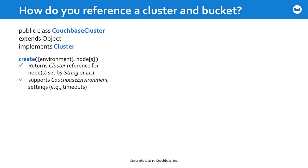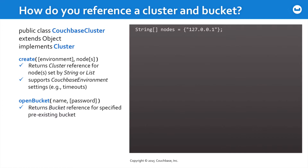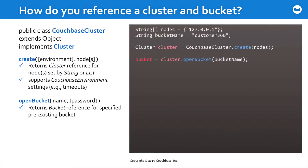That object allows you to open a specific bucket by name. If it is password controlled, that can be passed as well, and it'll return the bucket reference. So, if you have some set of nodes — here a very simple example of a string variable, we'll do something a bit more complex in the lab — and then a string bucket name, those nodes can be passed to the Create method of the CouchbaseCluster class, a factory method to return a cluster object. The cluster object, in turn, can be used to open a specific bucket by passing that bucket name. If there were a password, it would be passed here as well. That returns the bucket object, which is your primary point of interaction with Couchbase.